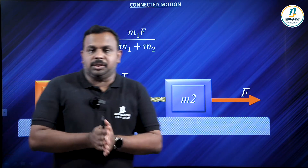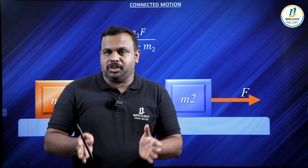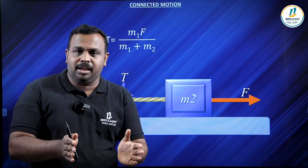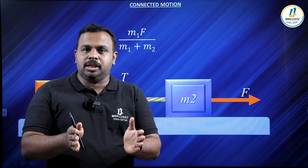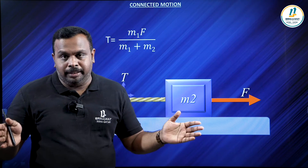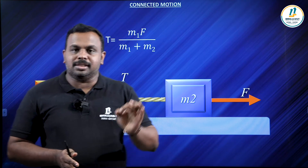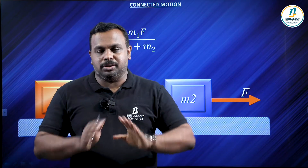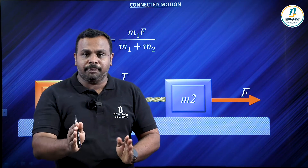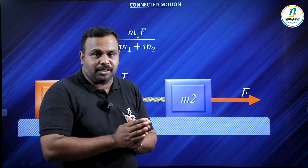In this session, we are going to discuss how to find the tension if two masses are connected by a string and that string is passing over a pulley and the system is moving vertically. This is different from horizontal motion — now we are going to discuss vertical motion.